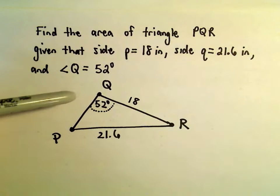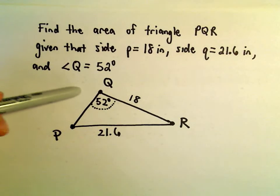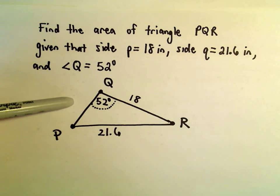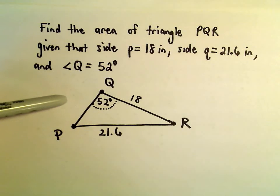To use Heron's formula we just need to find the length of the missing side and we can plug everything in and be in business. But to figure out the missing side, I think we're actually going to have to use the law of sines a couple times, or at least that will work for us.